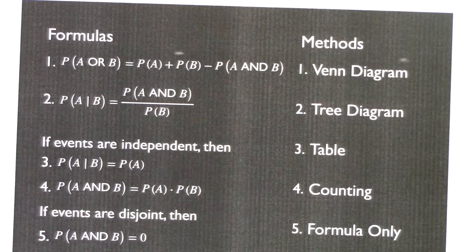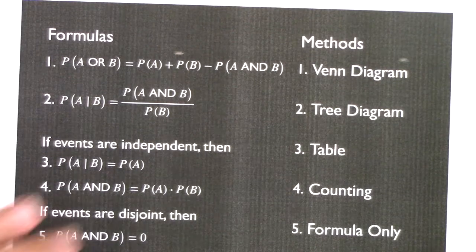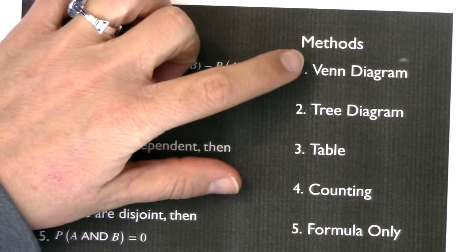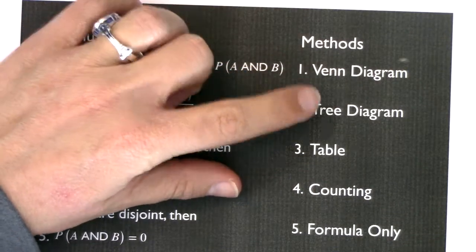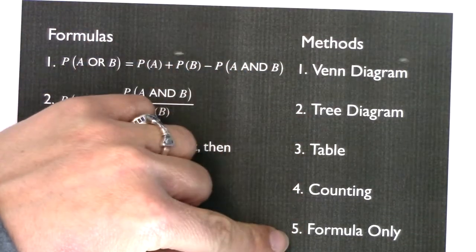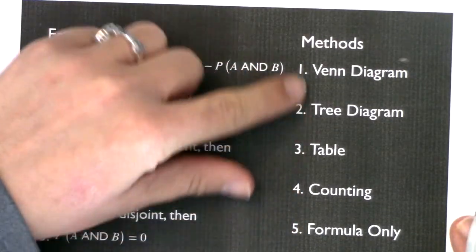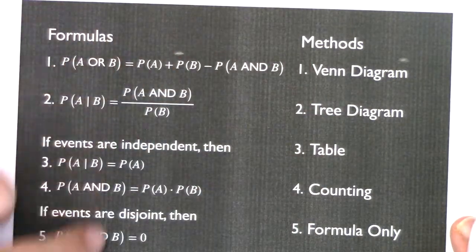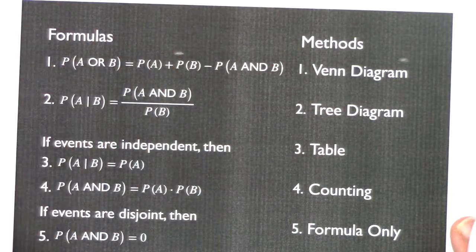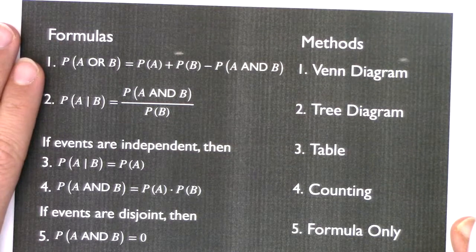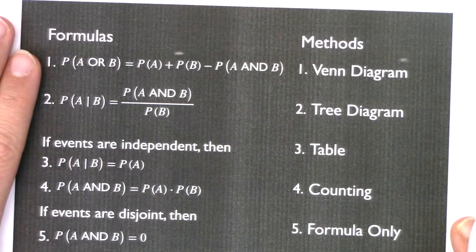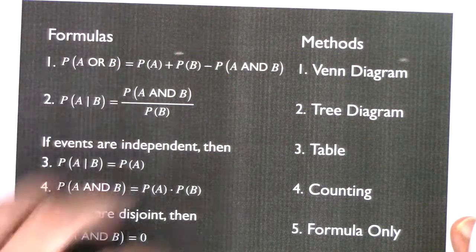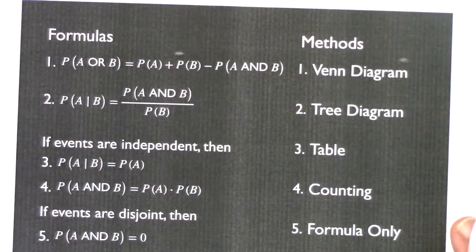See if we can start to get the feel about whether a problem sounds like an event, tree, table, counting, or is it formula only. Once you identify that, see which formula it's going to get paired with. It might be multiple formulas, especially if it's a free response. But if it's a multiple choice, it'll probably be one method and one formula.